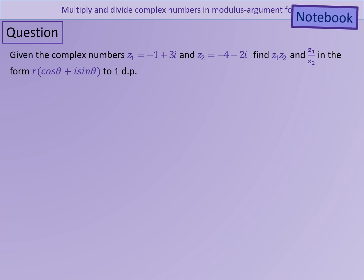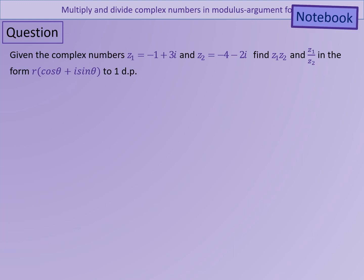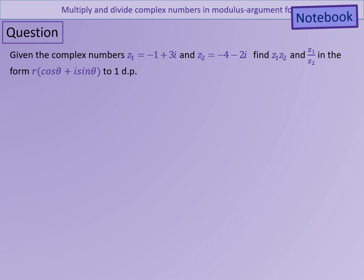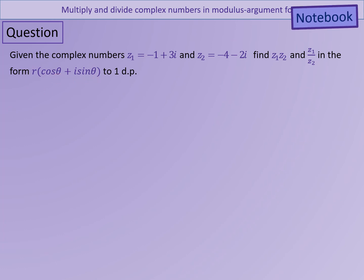Here is an example of how this might work. We've got two complex numbers: Z1 which is minus 1 plus 3i, and Z2 which is minus 4 minus 2i. We want to find Z1·Z2 and Z1 over Z2 in the form R bracket cos θ plus i sin θ. For this, it would be helpful to use the rules to find the modulus and argument of Z1·Z2 and Z1 over Z2, because the modulus and argument are going to appear in the answer. So the first thing we need to do is find the modulus of Z1 and the modulus of Z2.